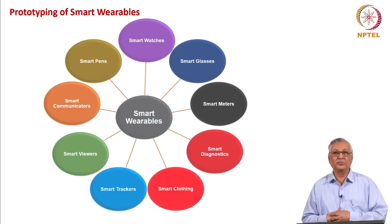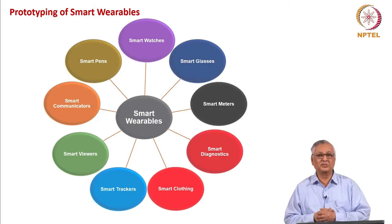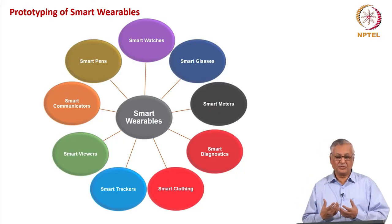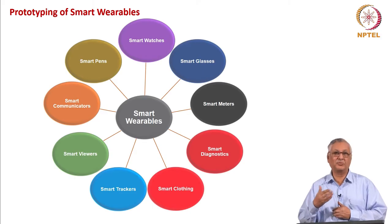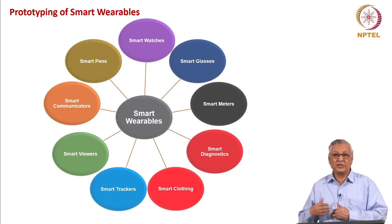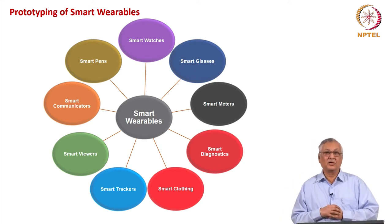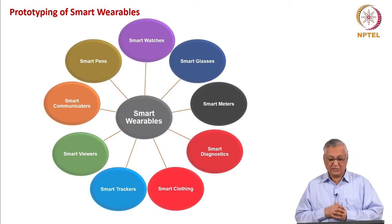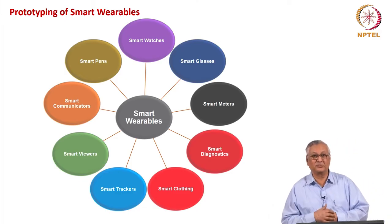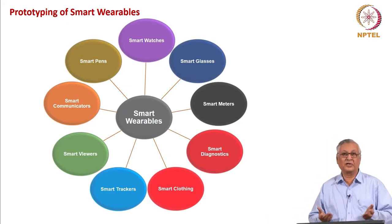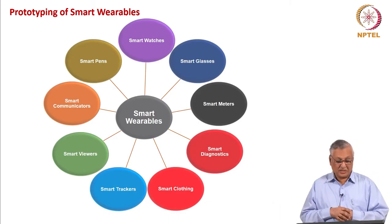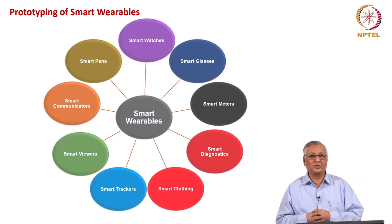Let us look at how to do prototyping of a smart wearable. A smart wearable is a run-of-the-mill product which we use, touch, or wear. A smart watch is the elegant flagship product of the smart wearable group. Then we have smart glasses, which Google has pioneered. Then smart meters like a glucose meter, which can understand glucose levels non-invasively. Then smart diagnostics like a digital pressure meter, smart clothing, smart trackers, smart viewers to improve vision, smart communicators for improved listening, and smart pens. Smart wearables as a class of products is available for prototyping.